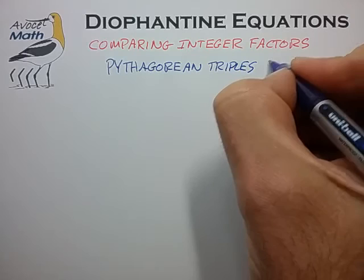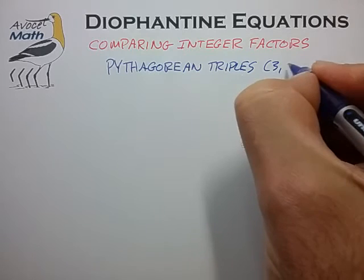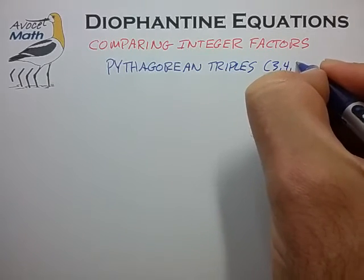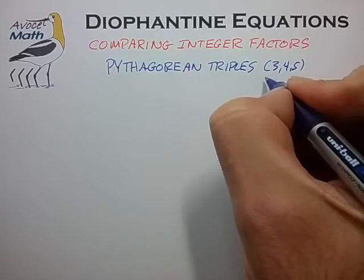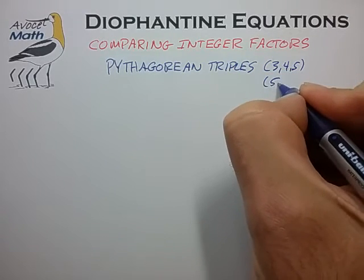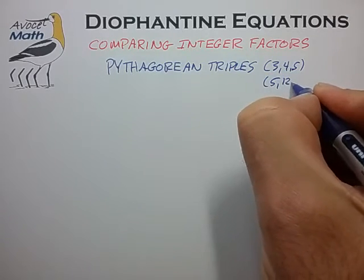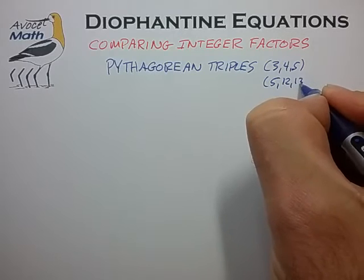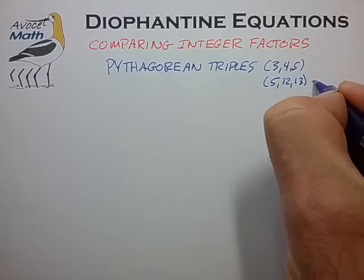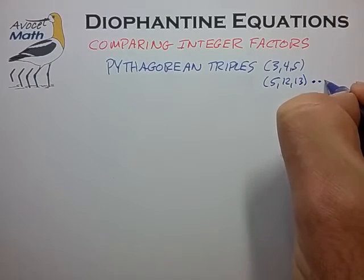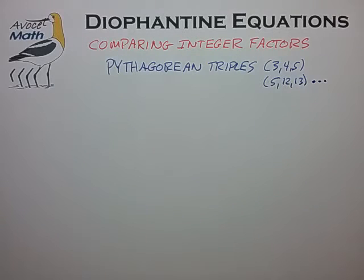These are number sets such as 3, 4, 5 and 5, 12, 13, and many more — probably familiar with those.